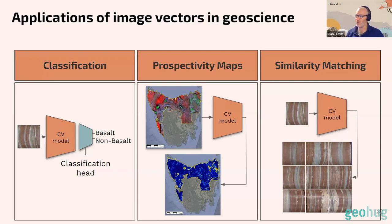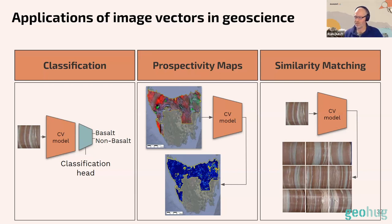We can also use those feature vectors for similarity matching. In reduced dimensionality space, things with similar feature vectors cluster together. You can use similarity metrics to say: find every other piece of core that looks like this piece of core. That's a really useful tool for automating target generation or logging processes.